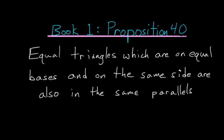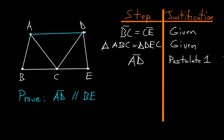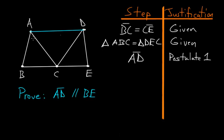For Book 1, Proposition number 40 of Euclid's Elements: equal triangles which are on equal bases and on the same side are also in the same parallels. So if we start with two triangles that we know are equal, triangle ABC and triangle DEC,